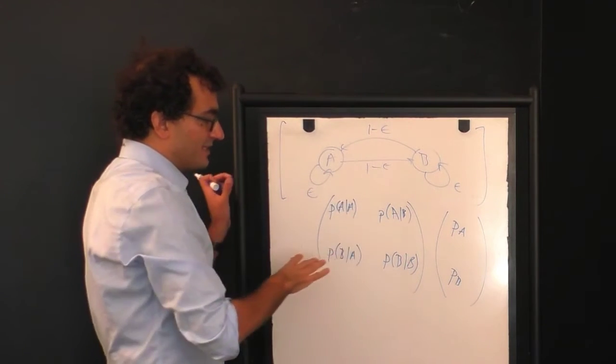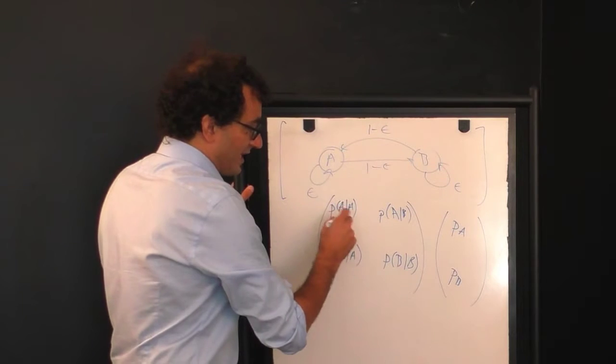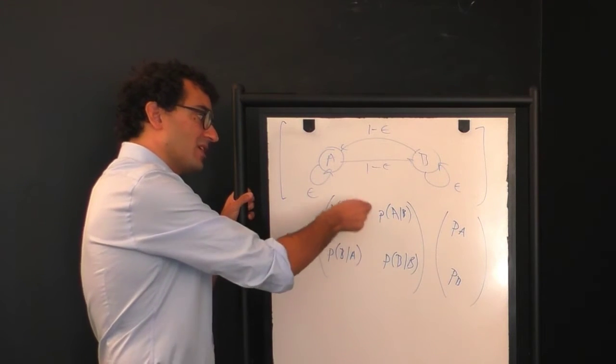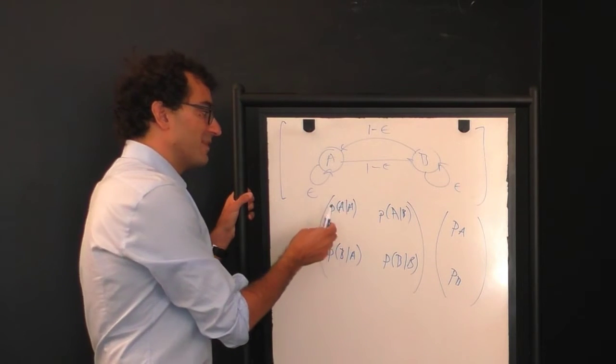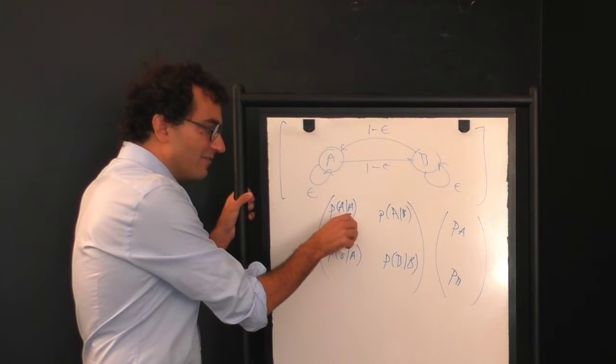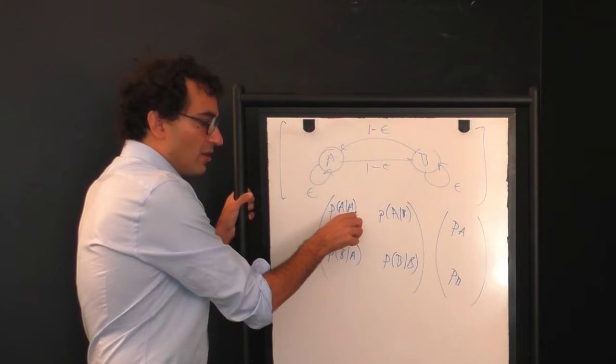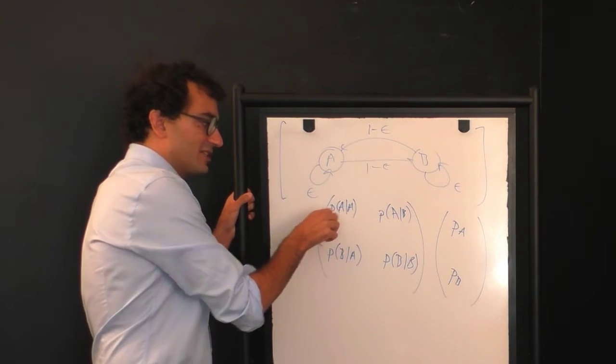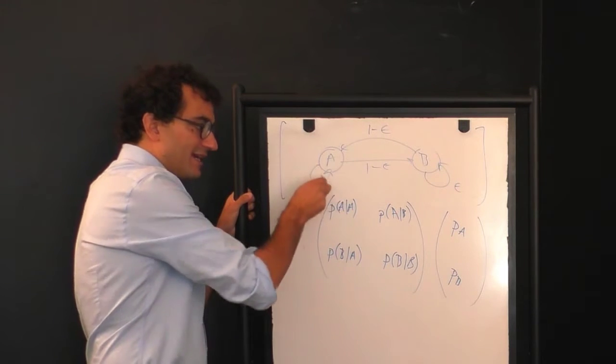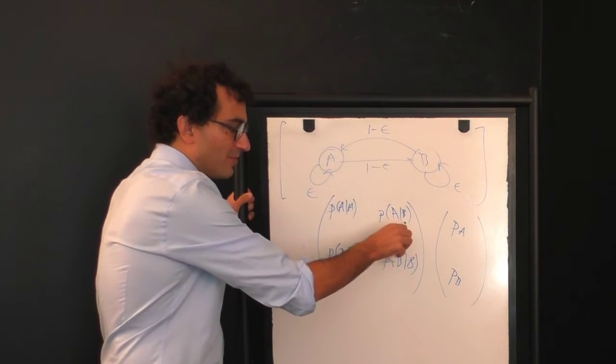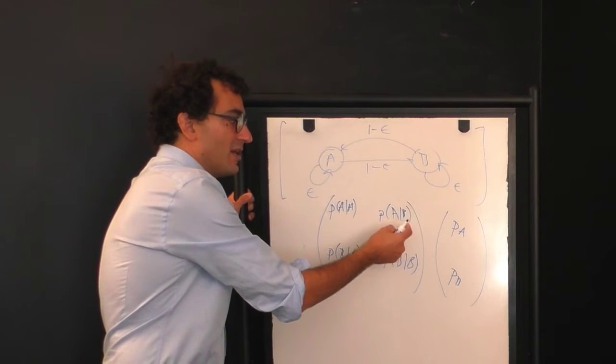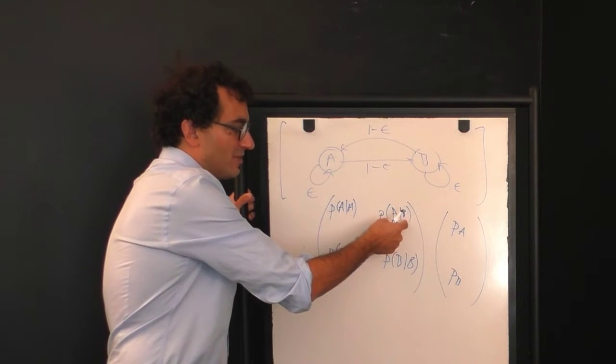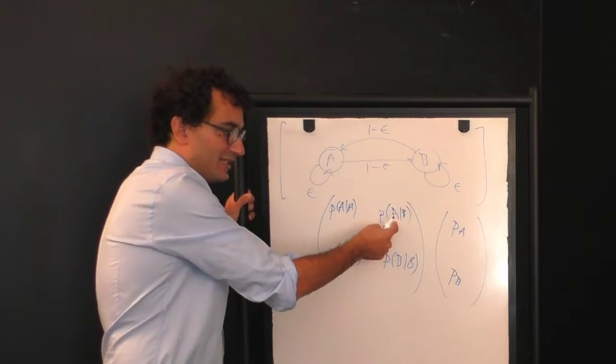Each term here is a conditional probability that tells you how you move depending upon which state you're in. For example, if the matrix is written like this, the first term in the top left corner of this matrix is the probability that given you're in state A, what's the probability that you transition to state A, stay in state A? Or here, in the top right corner, this is the probability that given you're in state B, you transition to state A.